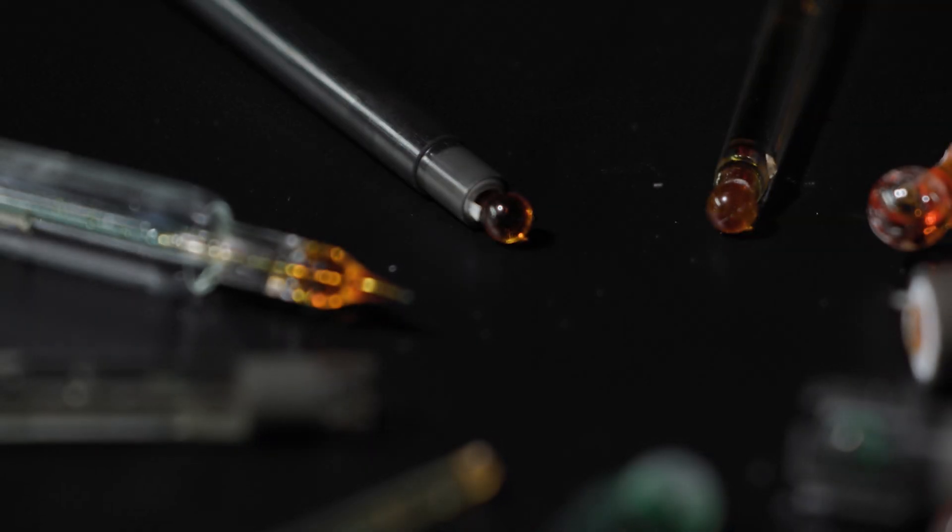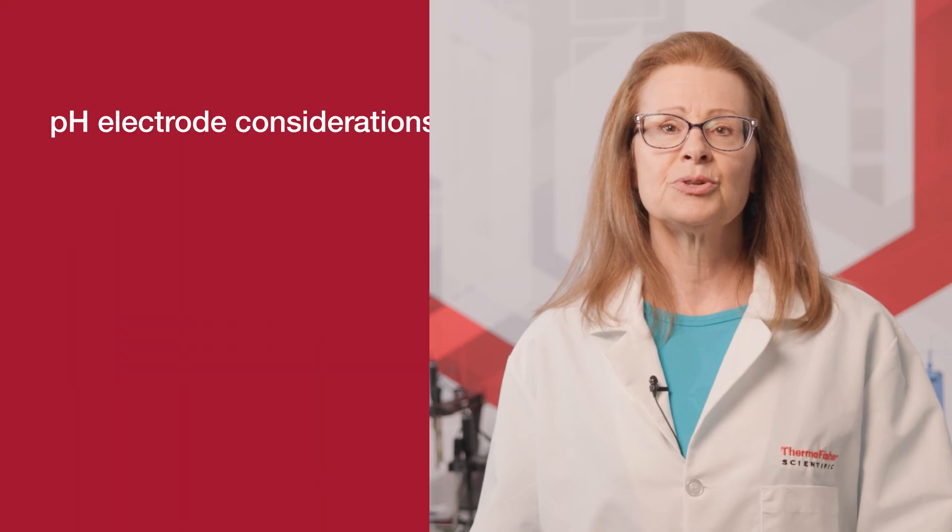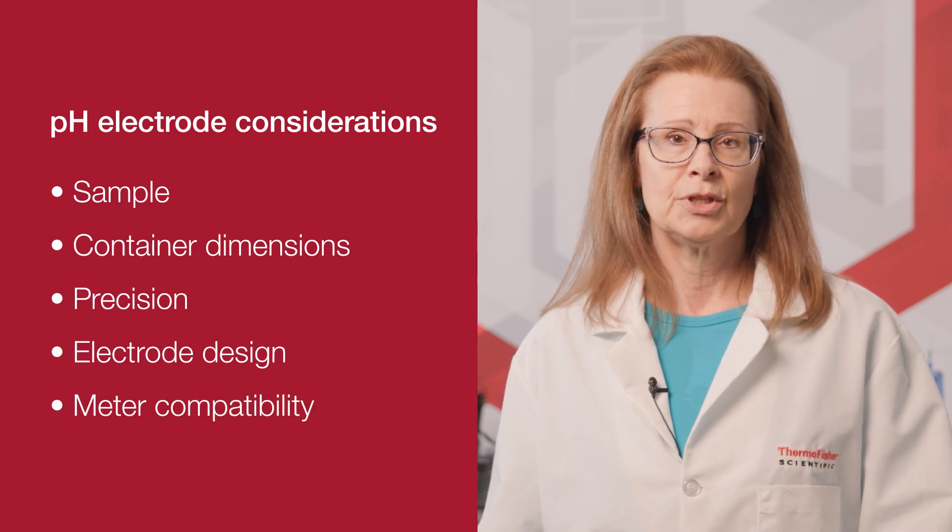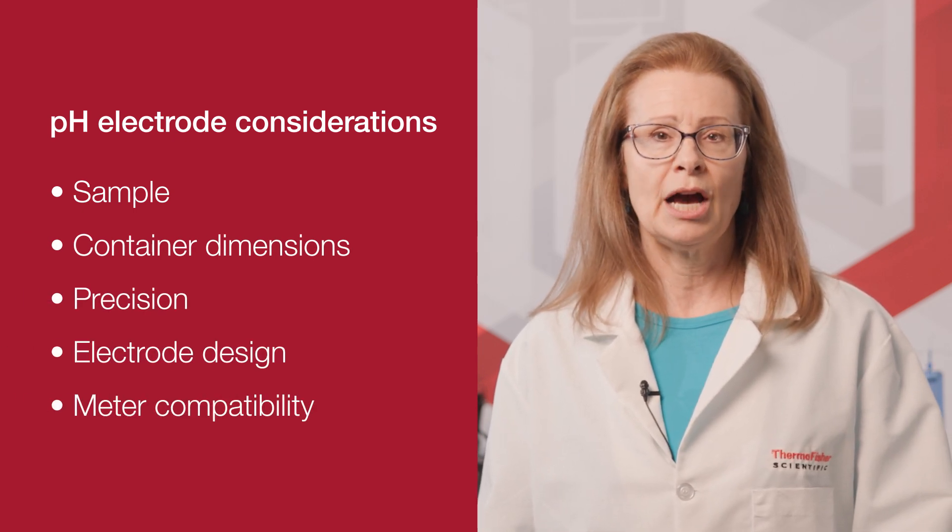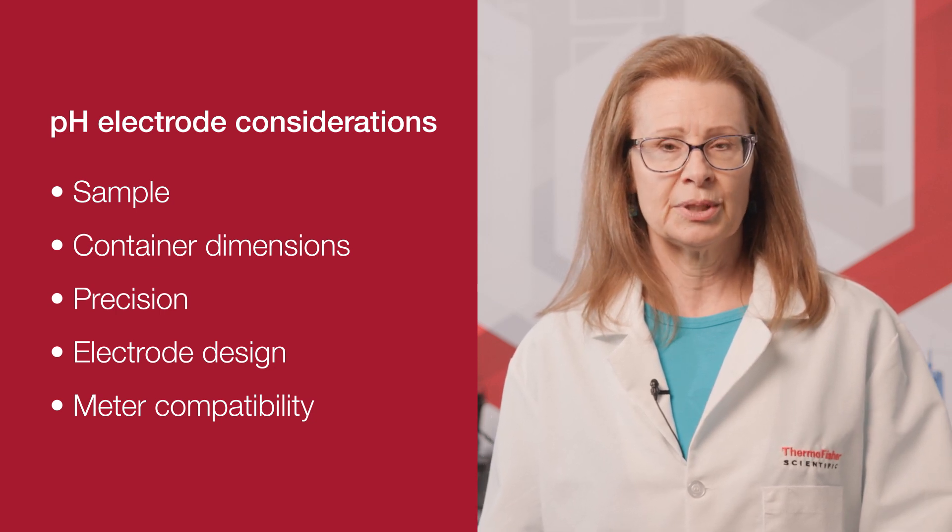At the center of every pH system is a pH electrode that drives the accuracy and reproducibility of the entire process. The key is selecting the correct pH electrode from the start. By considering the five main points discussed in this video, you can remove the guesswork and help ensure you're selecting the right pH electrode for your application.